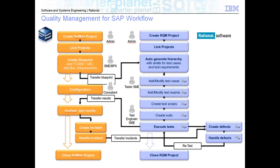You start with a project in a national CLM solution, then you link the project. Then you transfer the blueprint because you want to get your requirements and the entire traceability of your blueprint requirements in Solution Manager. So you transfer the blueprint and you get your test cases and your test requirements hierarchy.